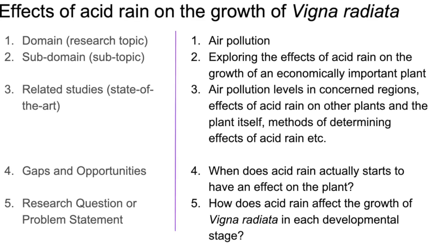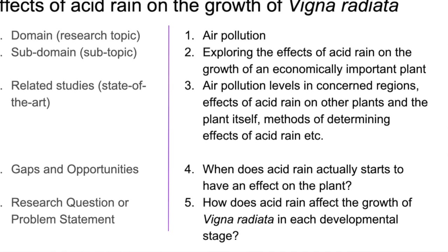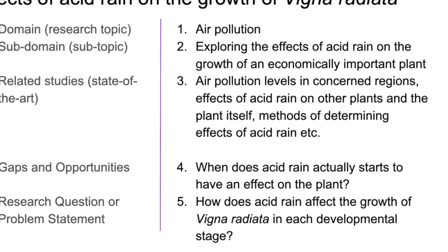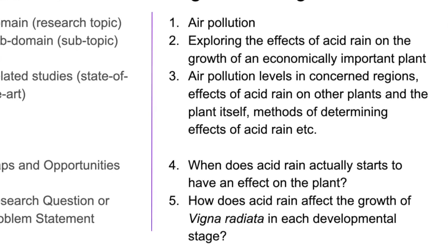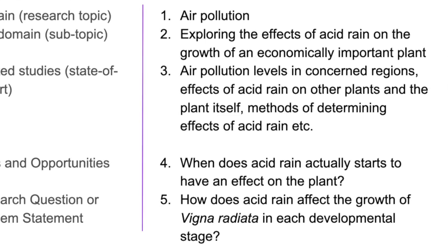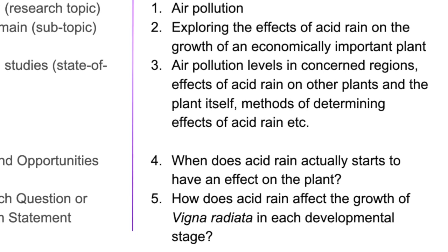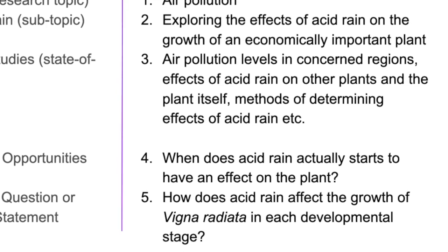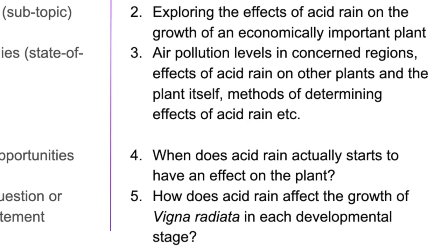So what they wanted to check was how acid rain affected the growth and development of an economically important plant, and in this case we decided to focus on mung beans. The RRL, or the Review of Related Literature that we did, looked at reports of acid rain in the Philippines, the different contents of acid rain and its effect on the soil, and how it has affected other plants or even the same plants within the genus or species.